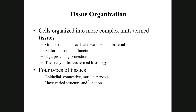Now let's talk about connective tissue. Everything in the body that isn't a covering, lining, gland, muscle, or nervous tissue is a type of connective tissue — it's a catch-all category. There are three groups: connective tissue proper (CT proper), supporting connective tissues, and fluid or transport connective tissues. I abbreviate connective tissue as CT.